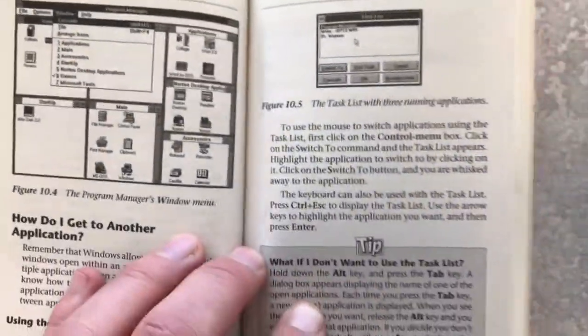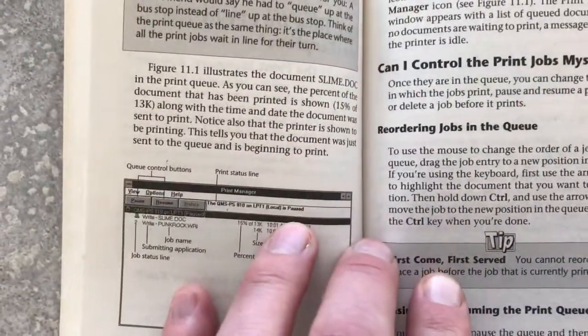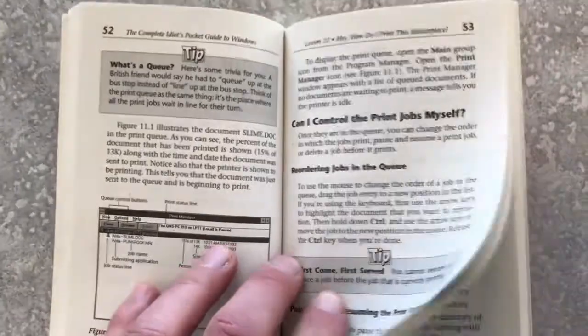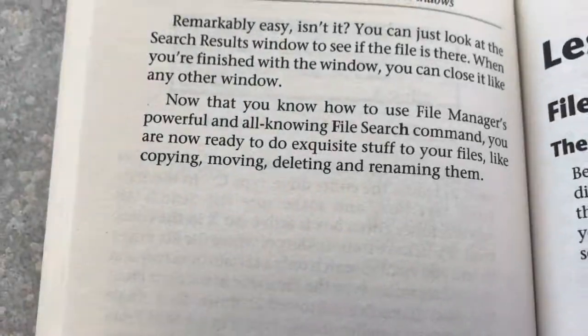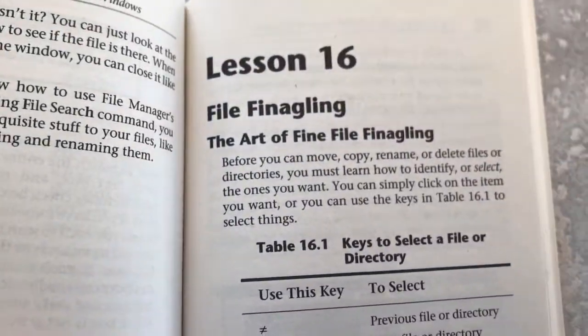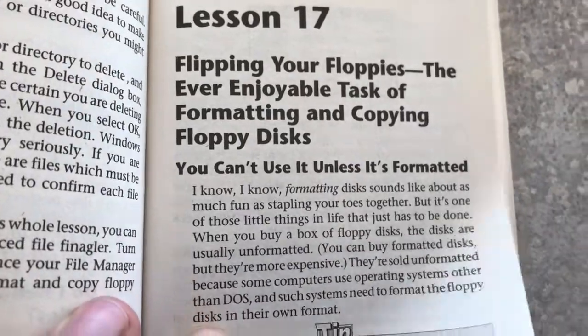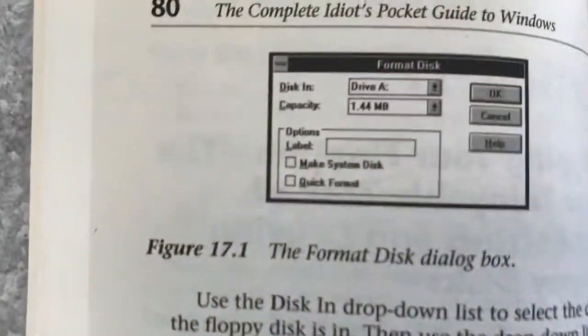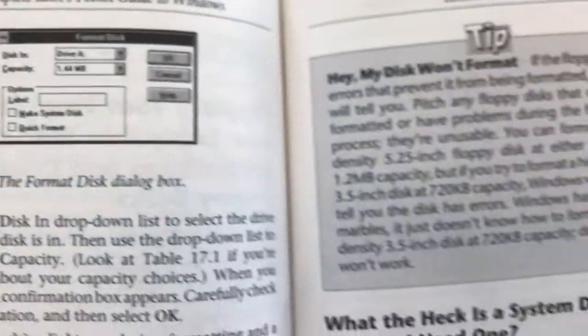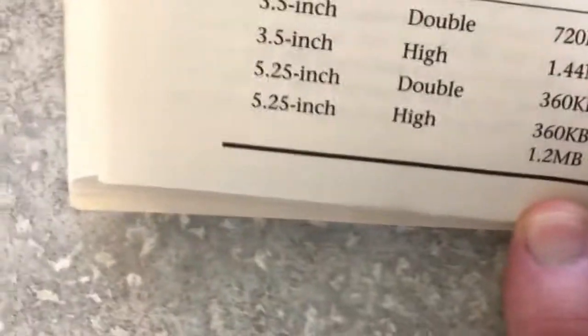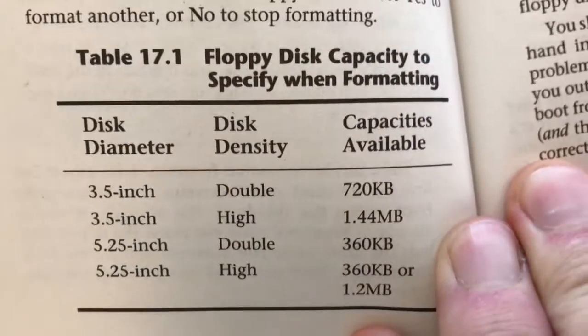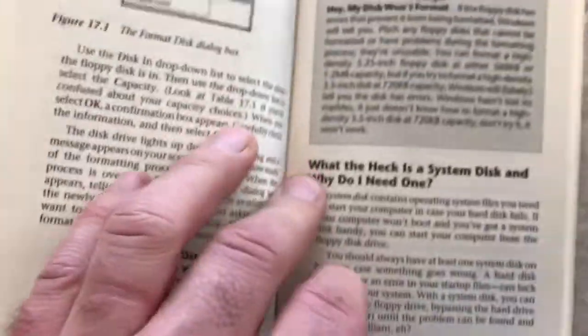What do these icons look like, and what do they do? Managing your files. Formatting your floppies. And here's that capacity of floppies table once again.